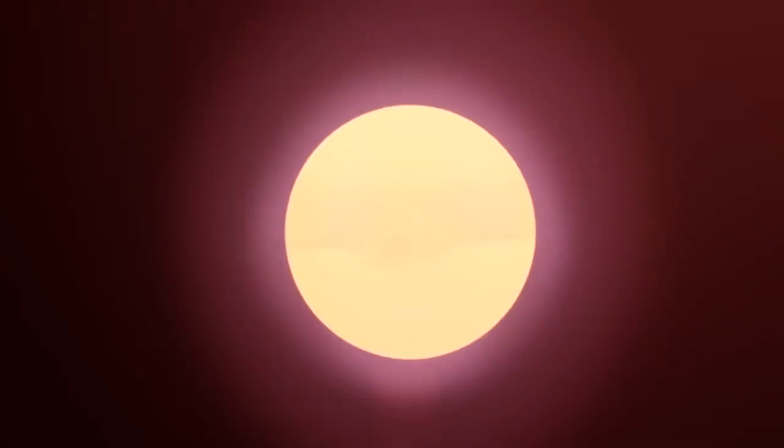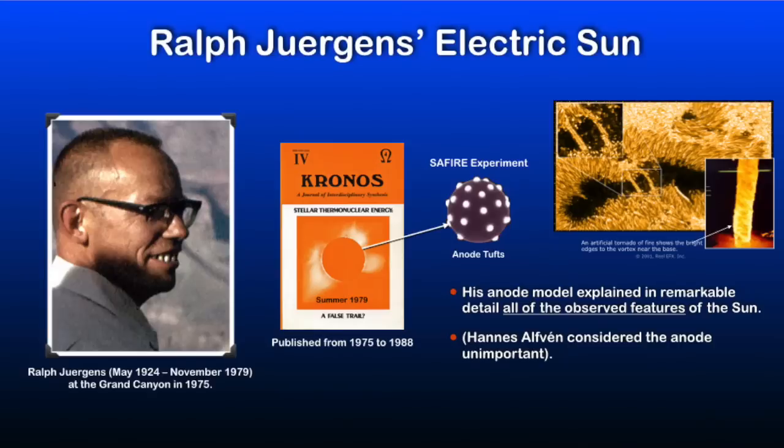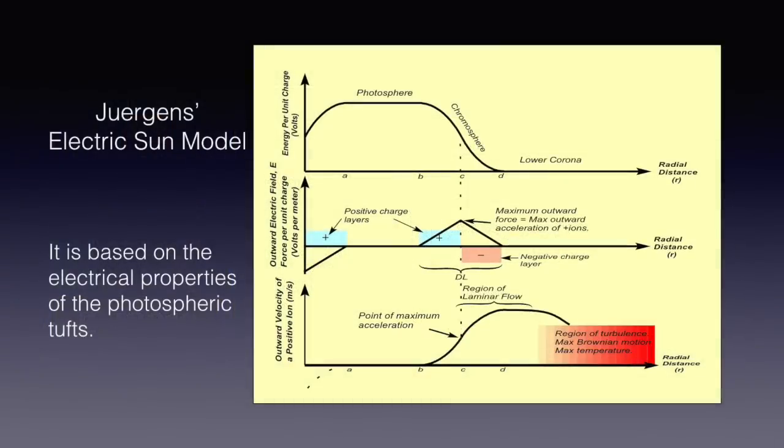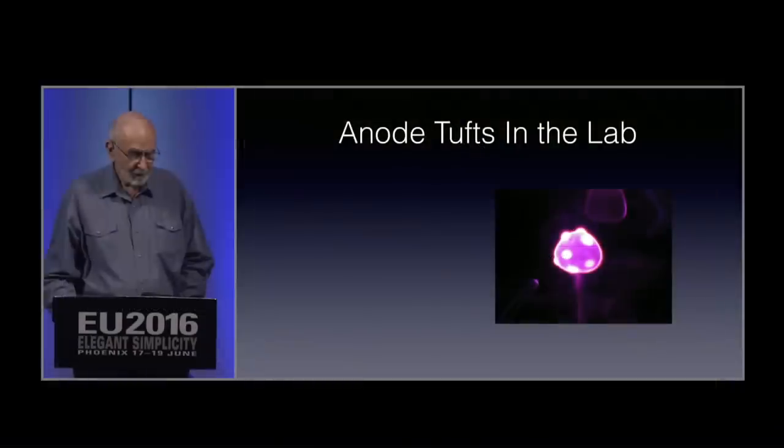As described in our recent interviews with physicist Wal Thornhill, the SAFIRE Project is an independent audit of the Electric Sun model, first proposed by engineer Ralph Juergens in the 1970s. As Thornhill noted, Thunderbolts colleague Dr. Donald Scott also extended Juergens' Electric Sun model through his recognition of the PNP transistor action of anode tufts or photospheric granulations on the Sun, which were successfully reproduced in SAFIRE's phase one proof of concept.